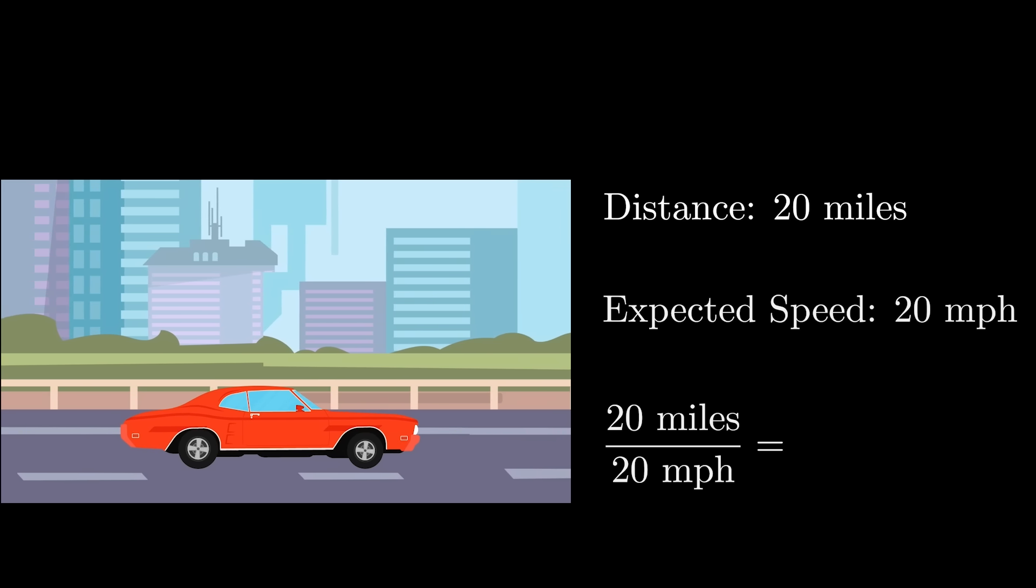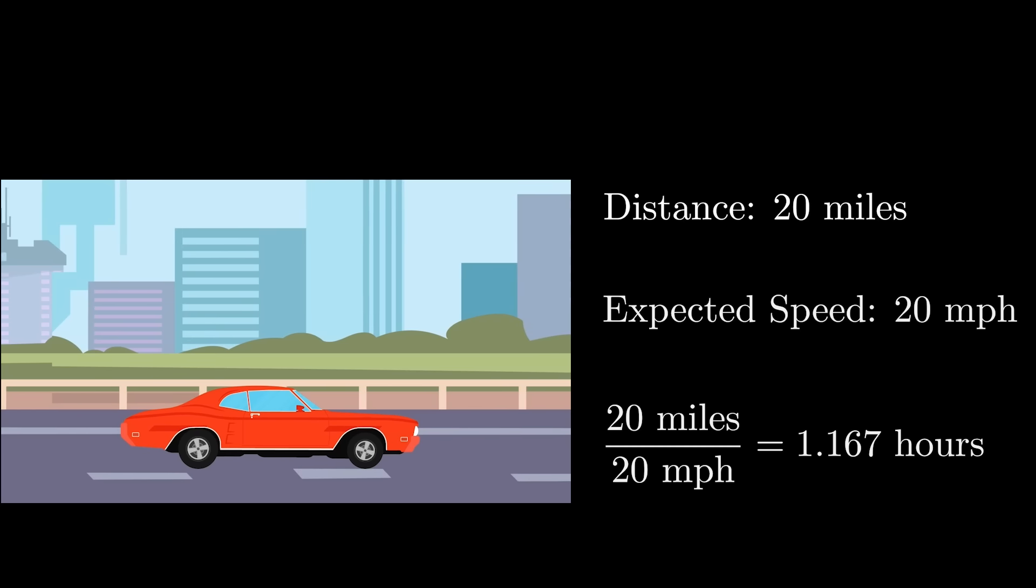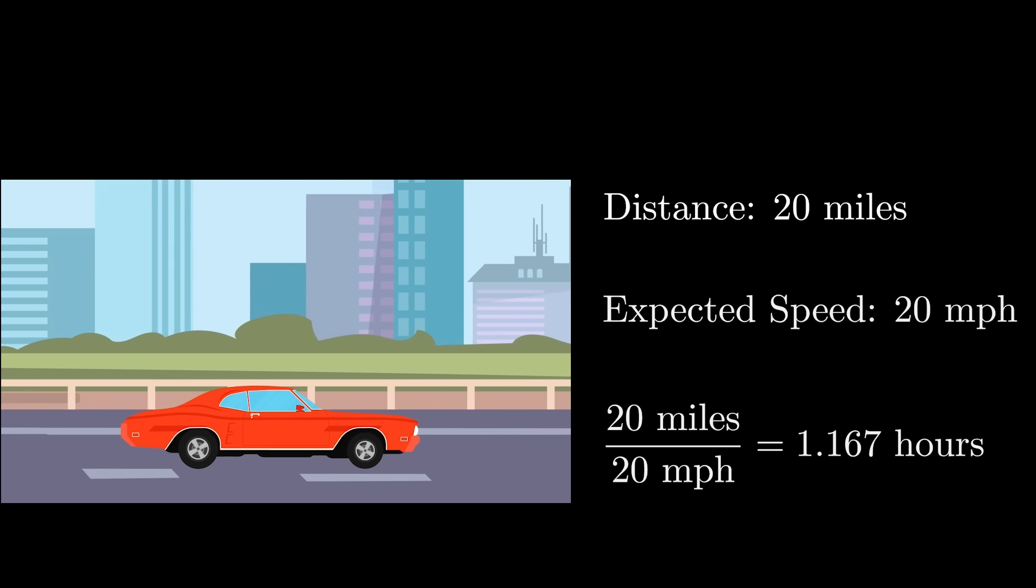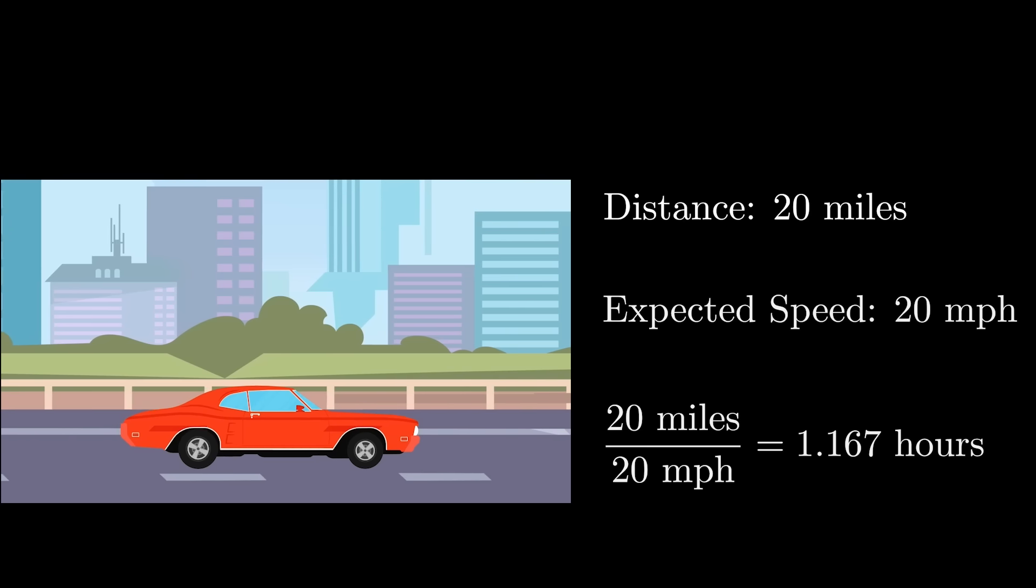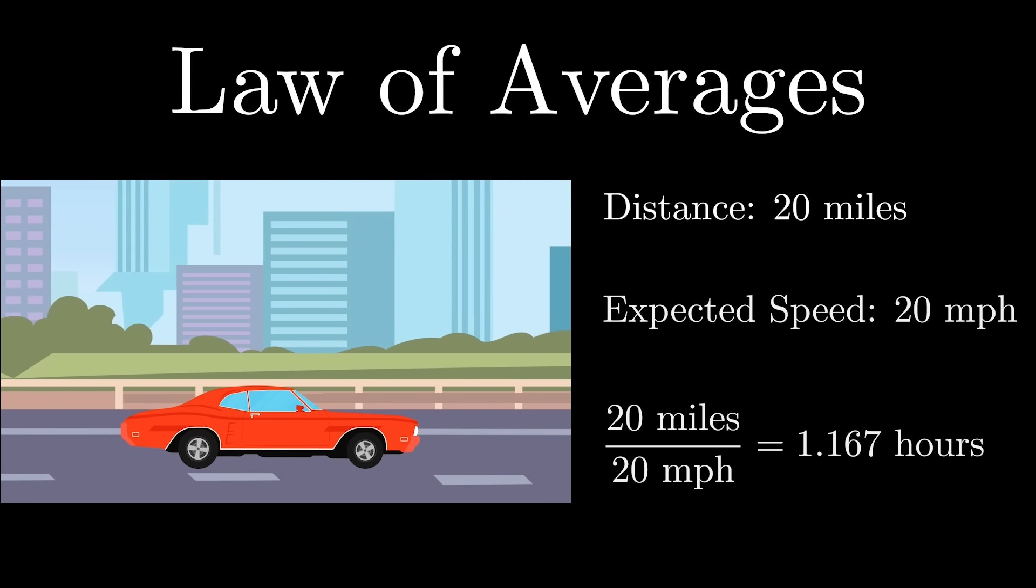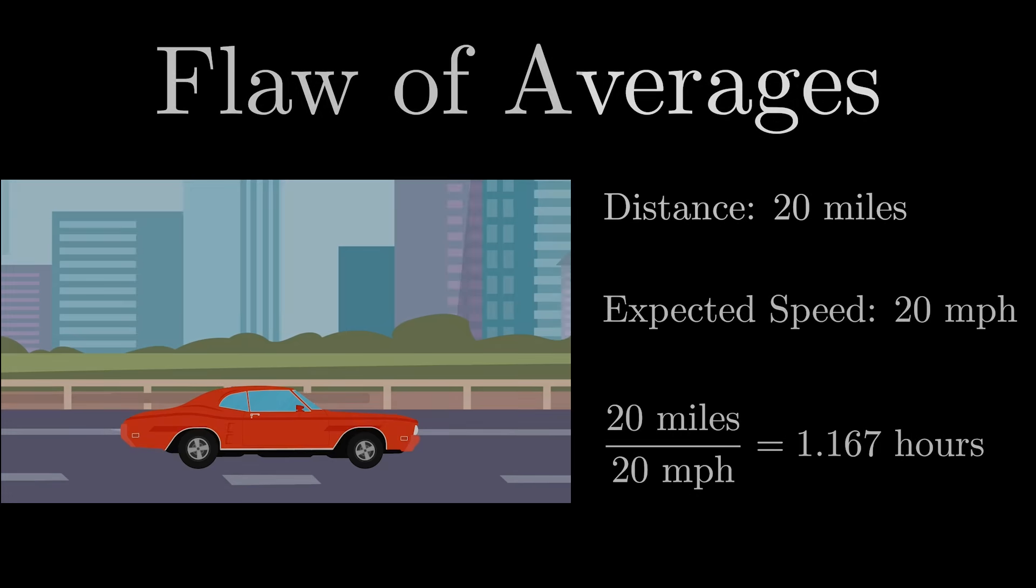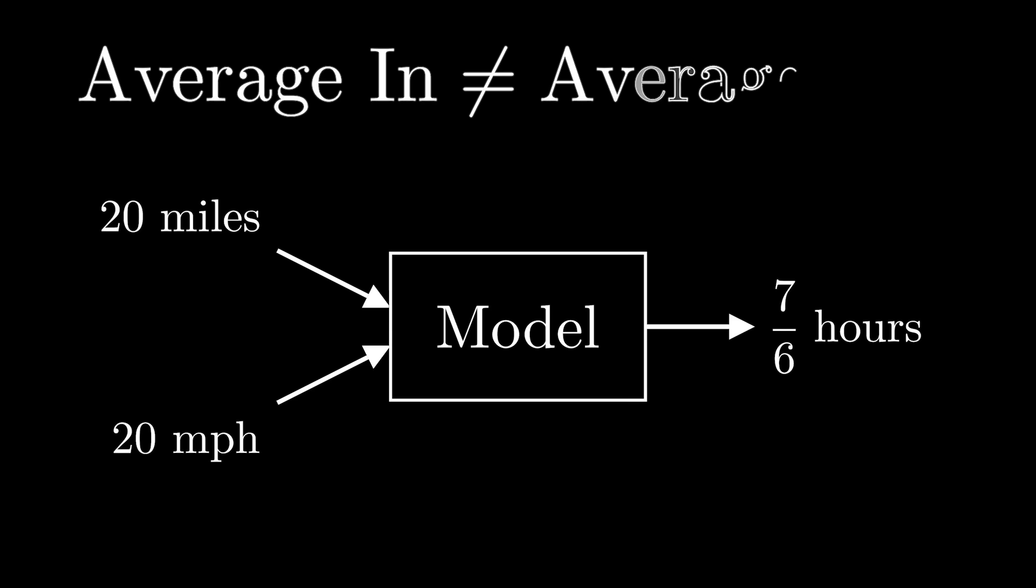What if I were to tell you that the correct answer was actually 7 over 6? Today I want to demonstrate to you why that may be the case based on a really neat and valuable mathematical concept. Not the law of averages, but rather the flaw of averages. The basic idea is that feeding average values into a function or model will typically not lead to the model's average output or response. Simply put, average in does not lead to average out. Now why is that the case? We'll delve into just that for the remainder of this video. So let's get started.